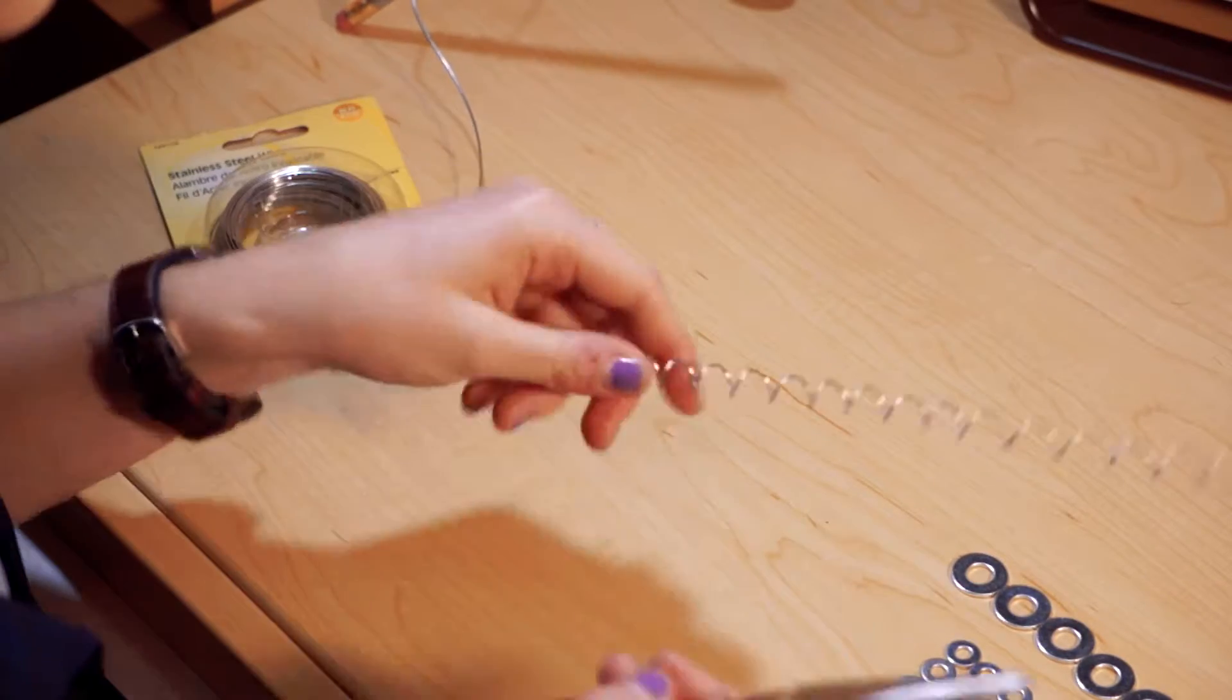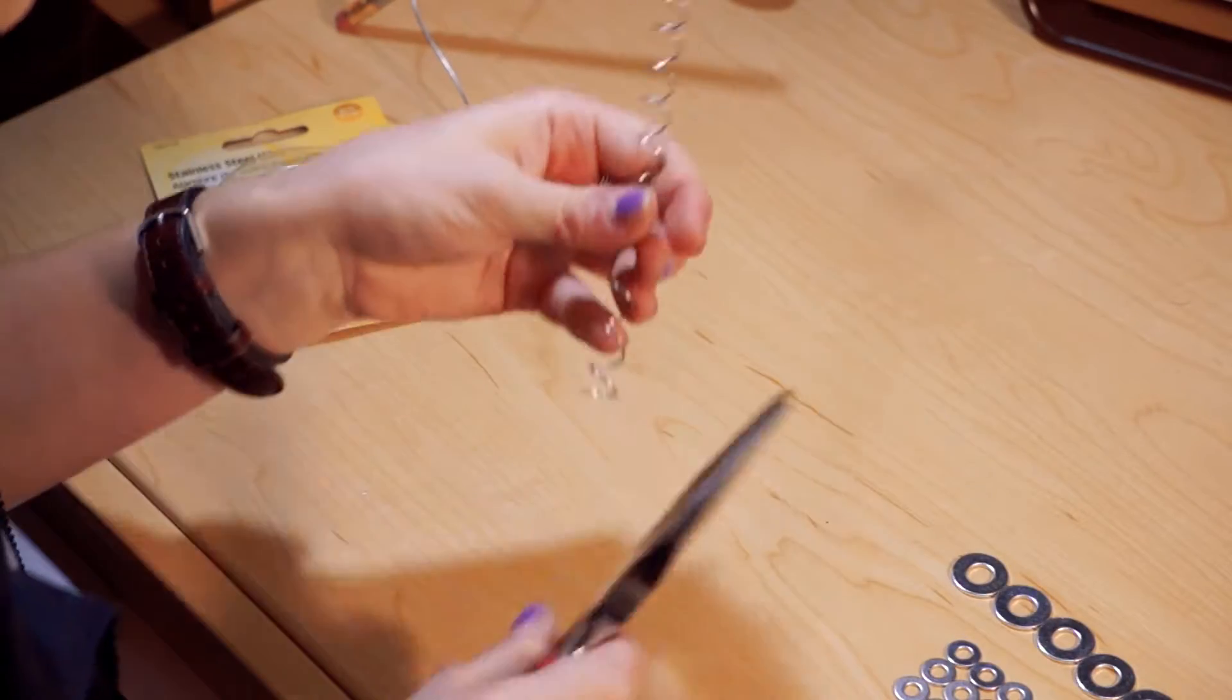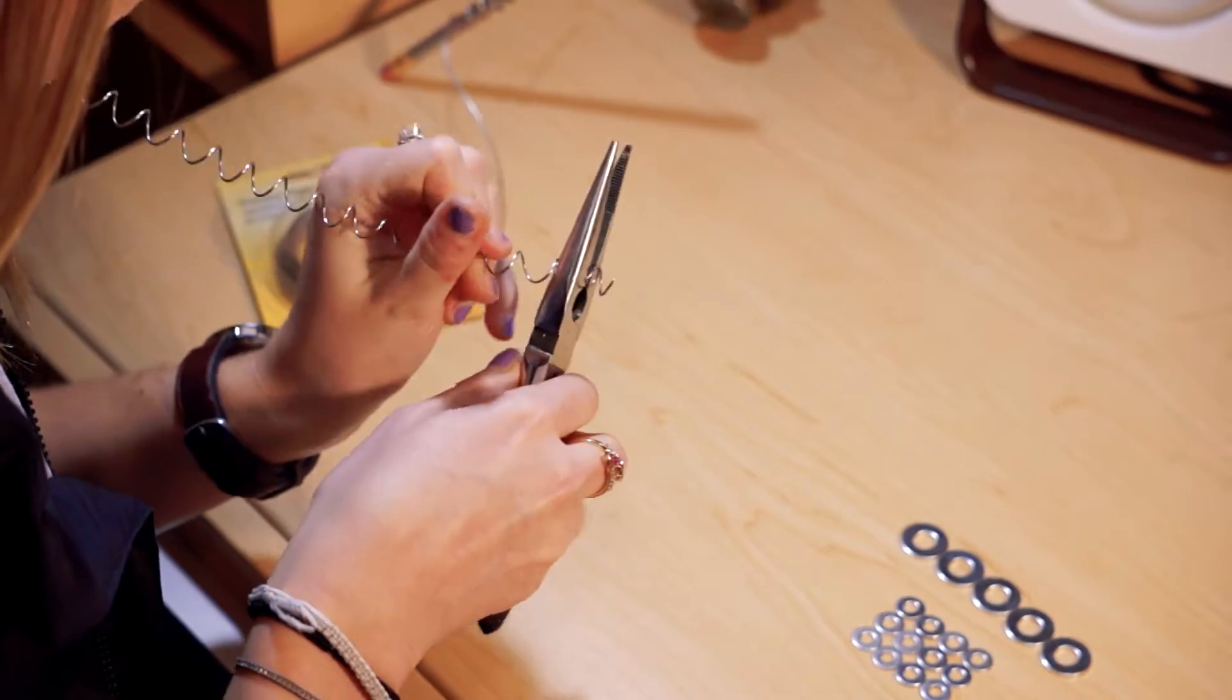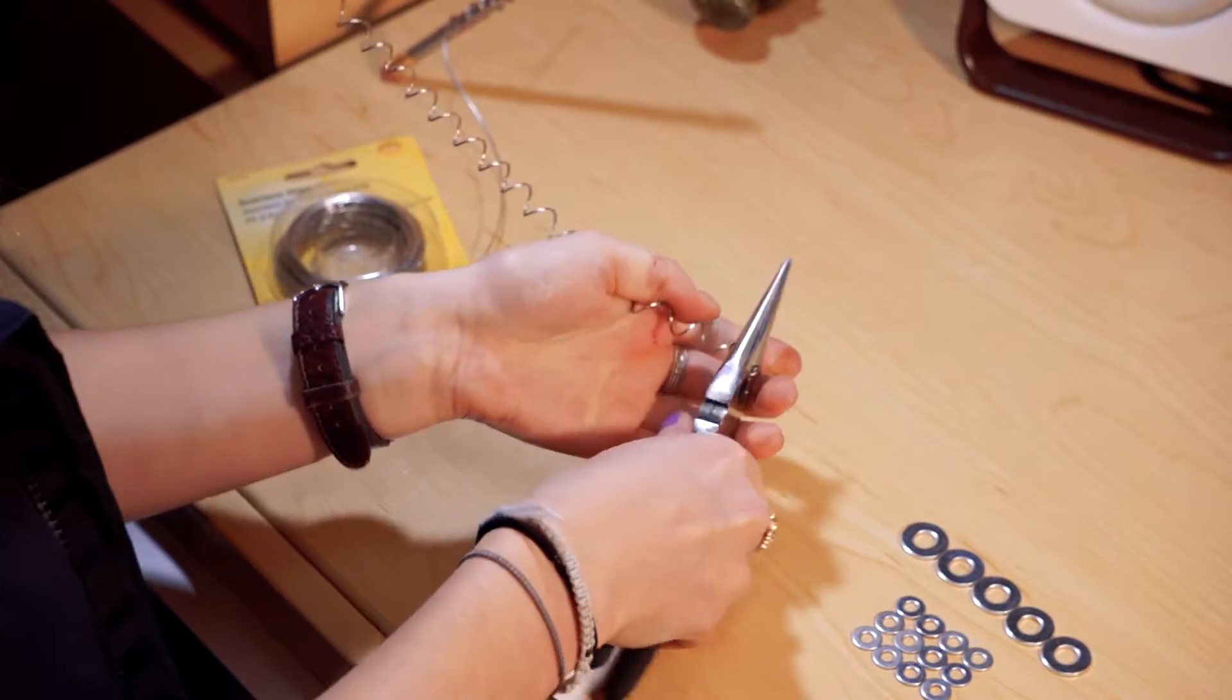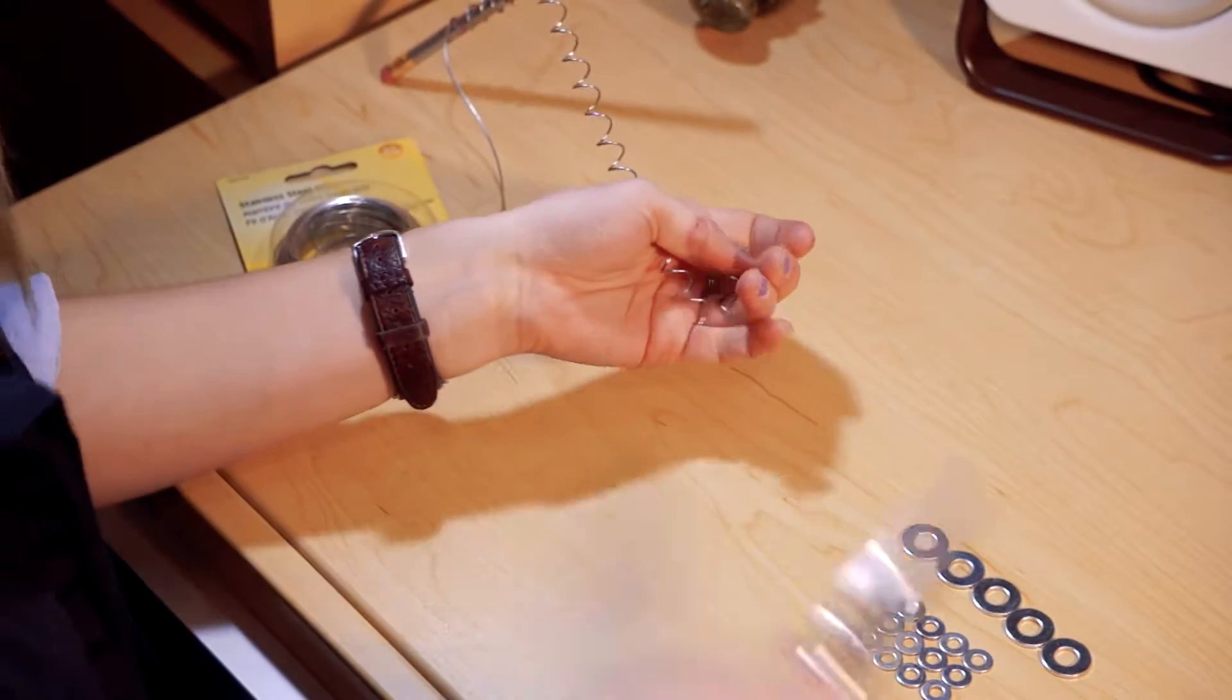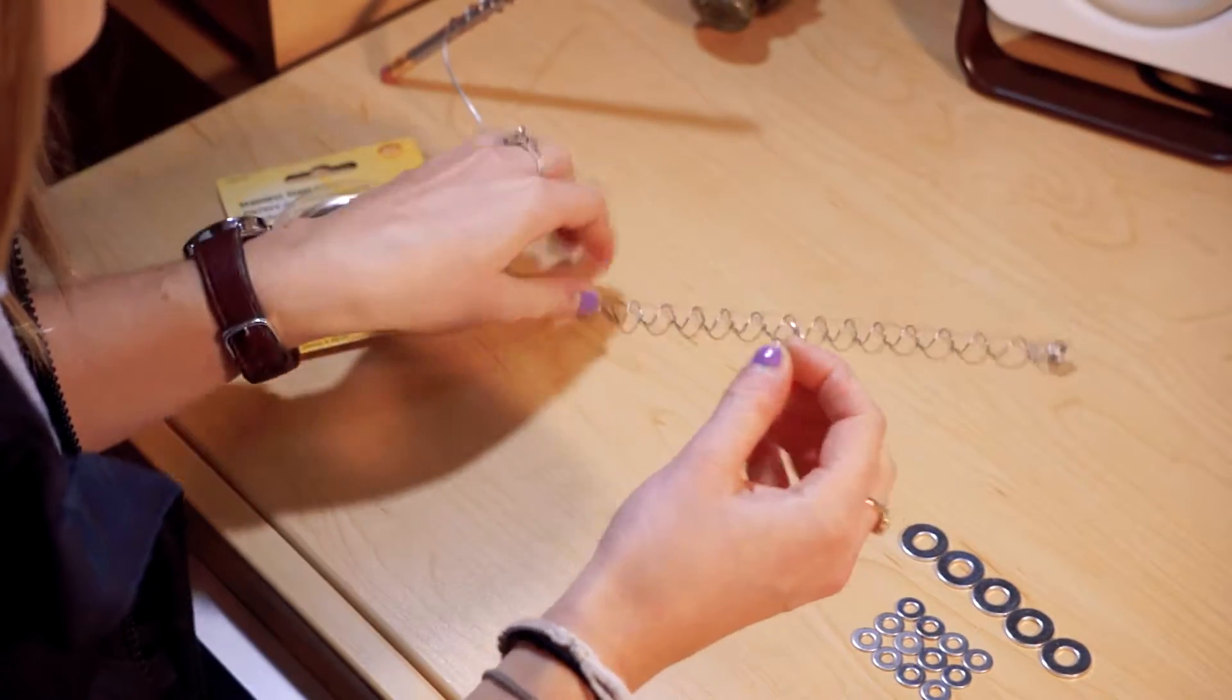And from there, what you're going to do is start cutting. You're going to cut it so you get little rings. And you're going to have rings that look like this.